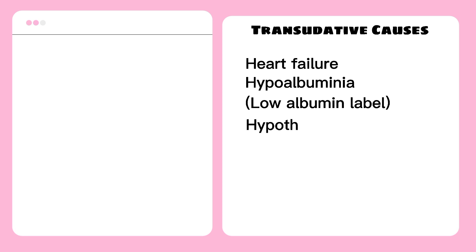The next cause is hypothyroidism. Hypothyroidism causes pericardial effusion through increased permeability of the epicardial vessels and decreased lymphatic drainage of albumin, resulting in accumulation of fluid in the pericardial space.